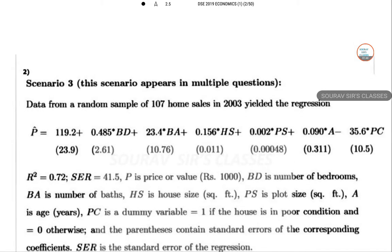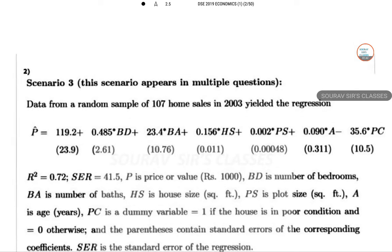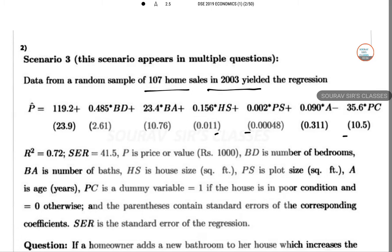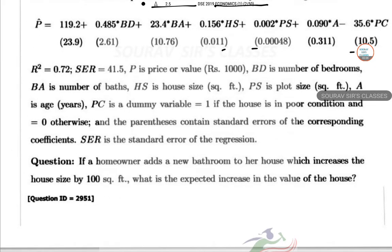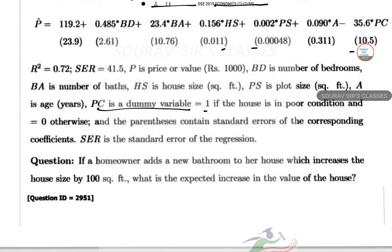Next, we have a scenario based problem. P equals this, a random sample of 107 home sales 2003. This is a simple sampling error with R², SER, price value, PS, everything is given. PC is the dummy variable, standard error of regression.